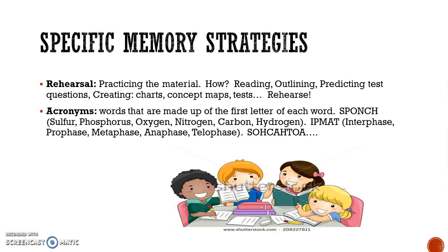Acronyms are words made up of the first letter of each word you have to remember. Like SPONCH — 99% of all living matter is made of SPONCH: sulfur, phosphorus, oxygen, nitrogen, carbon, and hydrogen. Or IPMAT, which is the cell cycle.